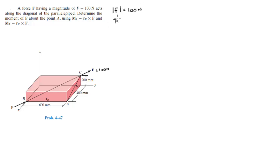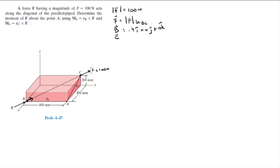The Cartesian vector form of F is given by the magnitude of F times the unit vector going from B to C. Here's B and here's C — times this unit vector with a magnitude of 1. We need to find this unit vector, so we need the coordinates of B and C. B sits at 0.4i + 0j + 0k — 0.4 because we're converting to meters: 0.6 meters and 0.2 meters. C sits at 0i + 0.6j + 0.2k.